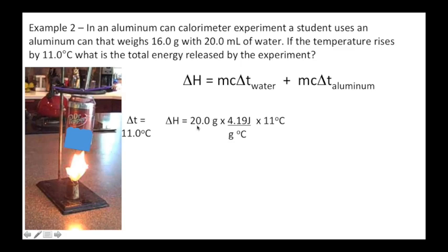So my water is 20 times 4.19 times 11, and now I have to add to that my aluminum, because heat goes not only into just the water - heat also goes into the tin can or the aluminum can. Heat also goes to the air and we're losing that, and that's just a source of error. Heat is going into the thermometer, but we don't know the specific heat capacity of the thermometer and we're not going to worry about that.